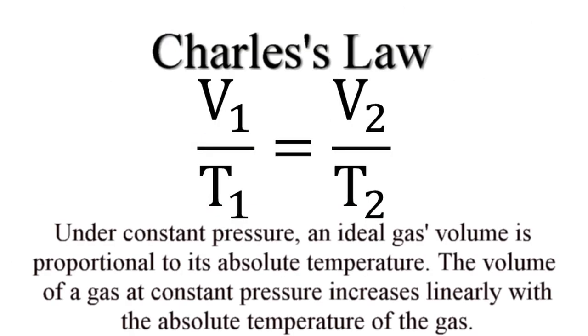Charles' law is stated as, under constant pressure, an ideal gas's volume is proportional to its absolute temperature, and the volume of a gas at constant pressure increases linearly with the absolute temperature of the gas.